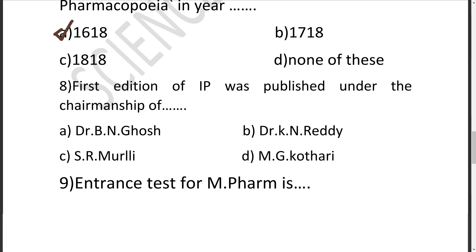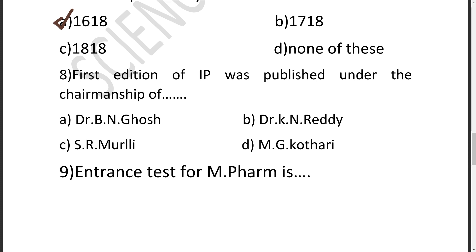The eighth question: The first edition of IP — Indian Pharmacopoeia — was published under the chairmanship of whom? Let's see the options: A is Dr. B.N. Ghosh, B is Dr. K.N. Reddy, C is S.R. Mooli, D is M.J. Kothari.